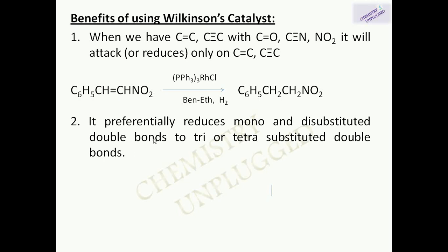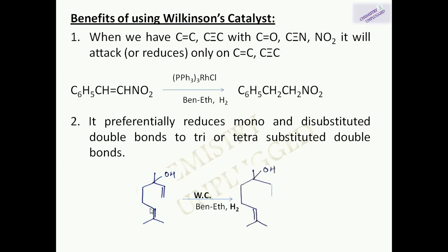The next benefit is that it preferentially reduces mono- and disubstituted double bonds over tri- or tetrasubstituted double bonds. If we have double bonds that are mono-substituted or disubstituted, they will be reduced in preference to tri- or tetrasubstituted double bonds. For example, in this molecule we have two types of double bonds — one is monosubstituted and one is trisubstituted — so Wilkinson's catalyst will reduce only the monosubstituted double bond. Also, cis alkenes are reduced more rapidly than trans alkenes.